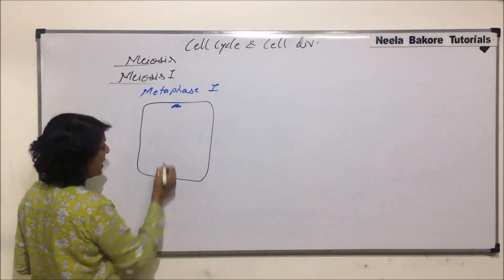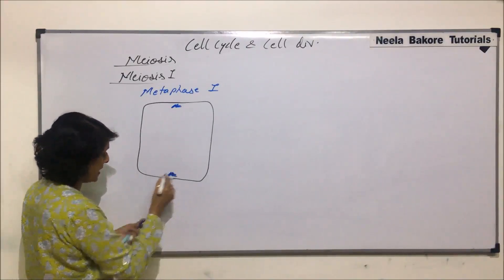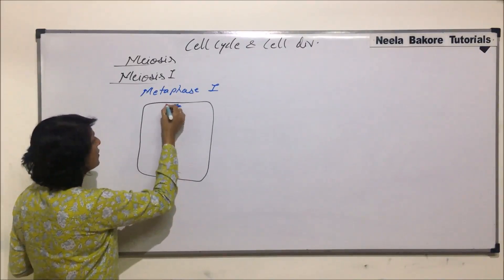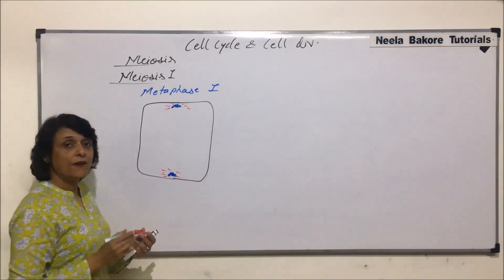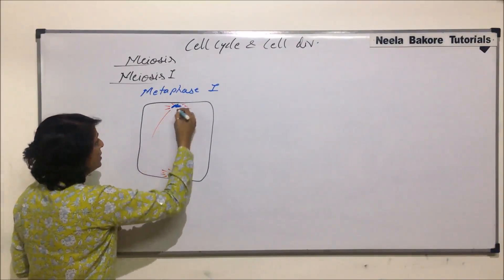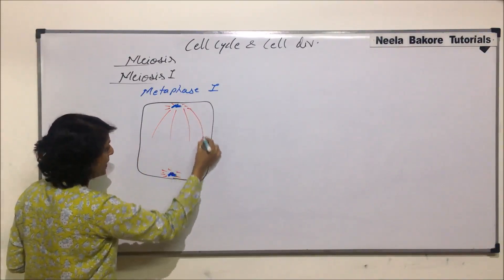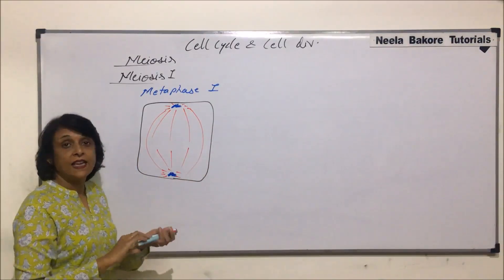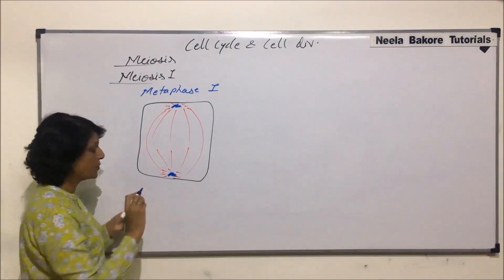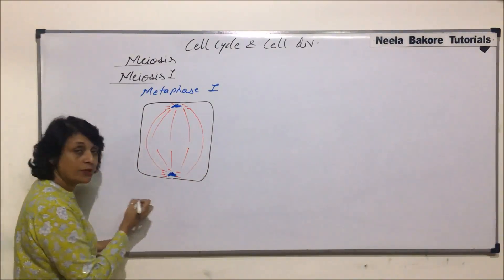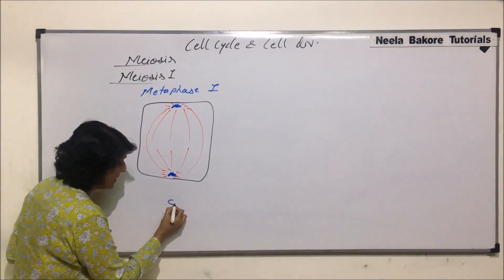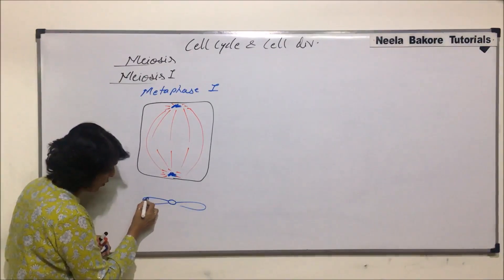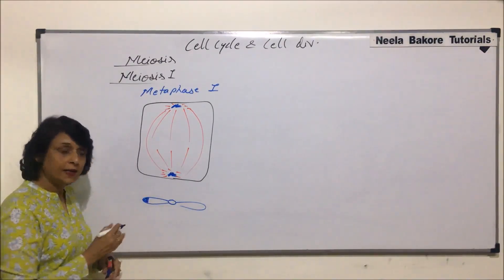The centrioles are at two ends and we can already see these fibers. The asters are already formed and spindle fibers are also there. Let us draw a few spindle fibers here. In this case, we see homologous chromosomes. I am going to draw the chromosomes separately — this was one chromosome, and here we had shown the exchanged genetic material.